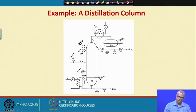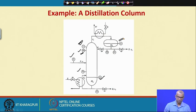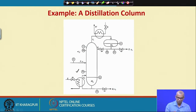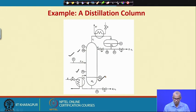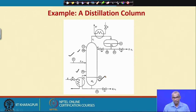Even in the simplest distillation column, imagine the number of instruments present — and the actual number for an industrial-scale operation will be much greater. This illustrates that temperature, pressure, flow, and level instruments are all required, and these are the most commonly encountered process variables in chemical process industries. At the end of this course, you will know more about these instruments.